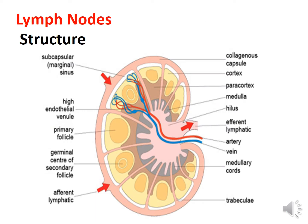The second lymphoid organ is lymph nodes. The structure of a lymph node includes a capsule with a subscapular or marginal sinus, a cortex, a paracortex below the cortex, and the innermost medulla. It has a hilum through which blood vessels enter and leave. Afferent channels bring lymph into the node and efferent channels drain the lymph. Trabeculae are extensions of the capsule.